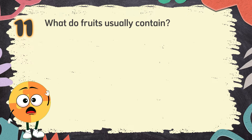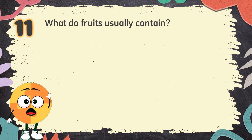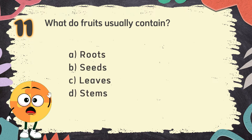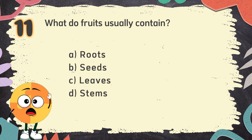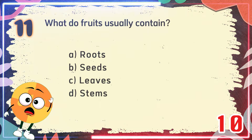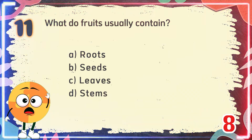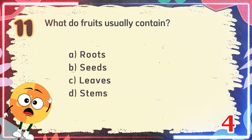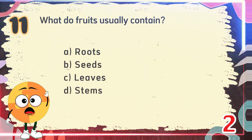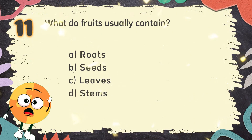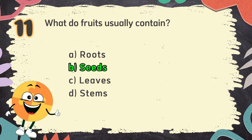Number 11: What do fruits usually contain? The choices are: A. Roots, B. Seeds, C. Leaves, D. Stems. The correct answer is B. Seeds.